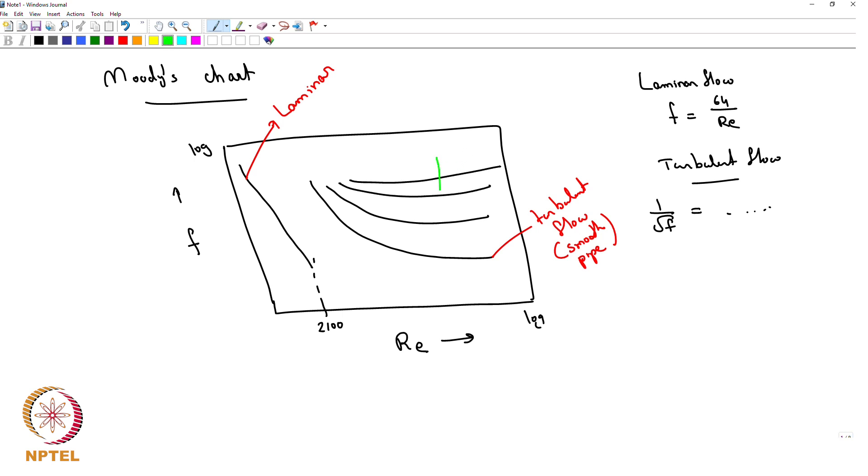This is basically you go up in this direction, this is increasing the roughness, the roughness factor. Each of those curves would be corresponding to a particular value of epsilon by d.